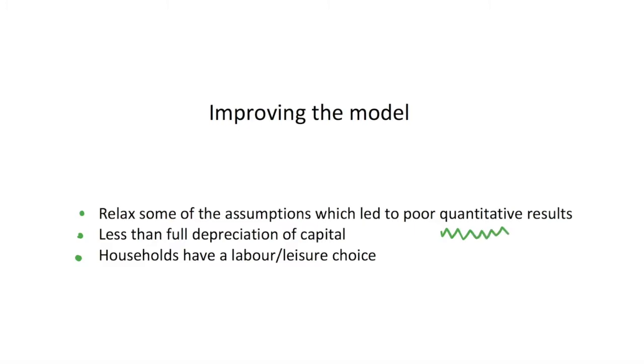This should hopefully deal with this problem that we have poor quantitative results by actually making our model better reflect reality. If we implement these changes where our depreciation rate isn't just one, but is this parameter delta, we might estimate that to say 0.1 or 10% of the capital stock depreciates every period, or we could say 0.02, 2% depreciates every period. Of course, this depends how we define a period - it could be a quarter of a year or a year.